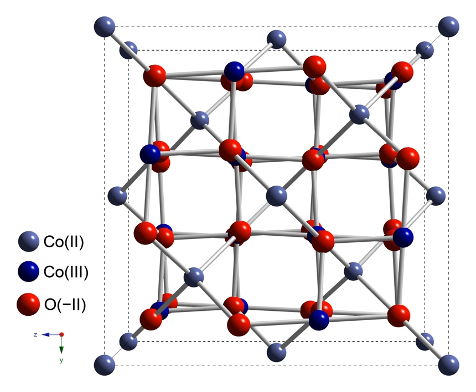Structure: Co3O4 adopts the normal spinel structure, with Co2+ ions in tetrahedral interstices and Co3+ ions in the octahedral interstices of the cubic close-packed lattice of oxide anions.